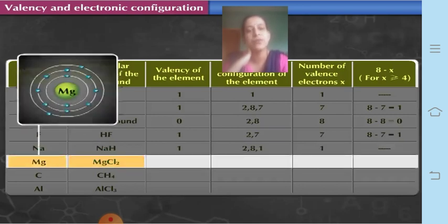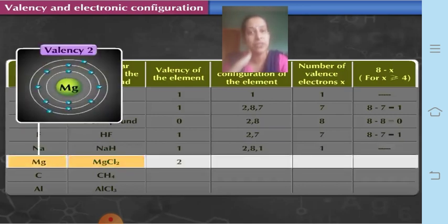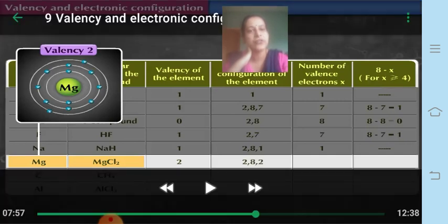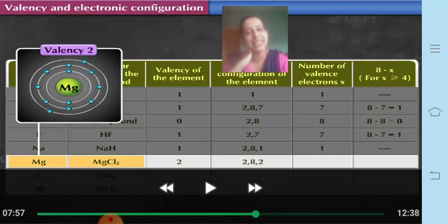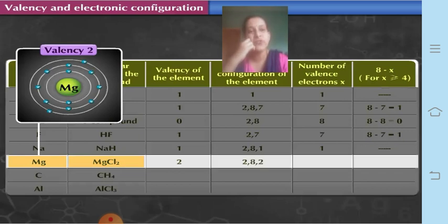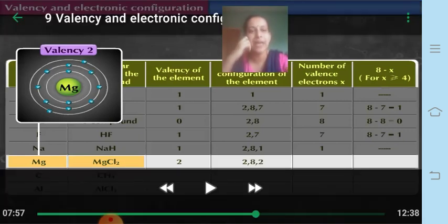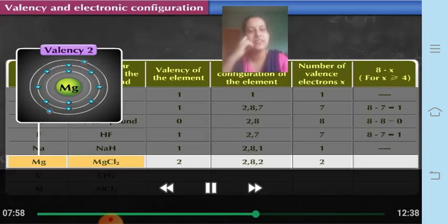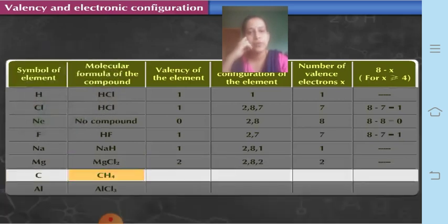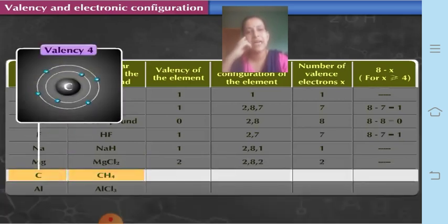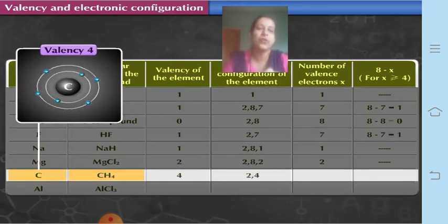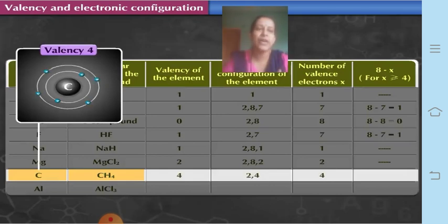Magnesium in magnesium chloride (MgCl₂) has valency 2 — you can see Cl₂ in the formula. Its electronic configuration is 2, 8, 2, and the number of valence electrons is 2, so valency is 2. In methane, carbon has valency 4. Its electronic configuration is 2, 4, so the number of valence electrons is 4, and 8 minus 4 equals 4.